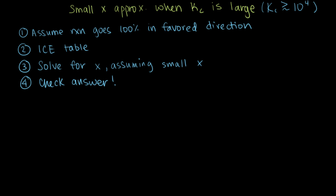In this video, we'll be talking about the opposite situation. The steps for solving this kind of problem are fourfold. The first step is to assume that the reaction goes 100% in the favored direction. Since K is really large, that means we're going all the way to products — we're assuming we have almost no starting materials left.